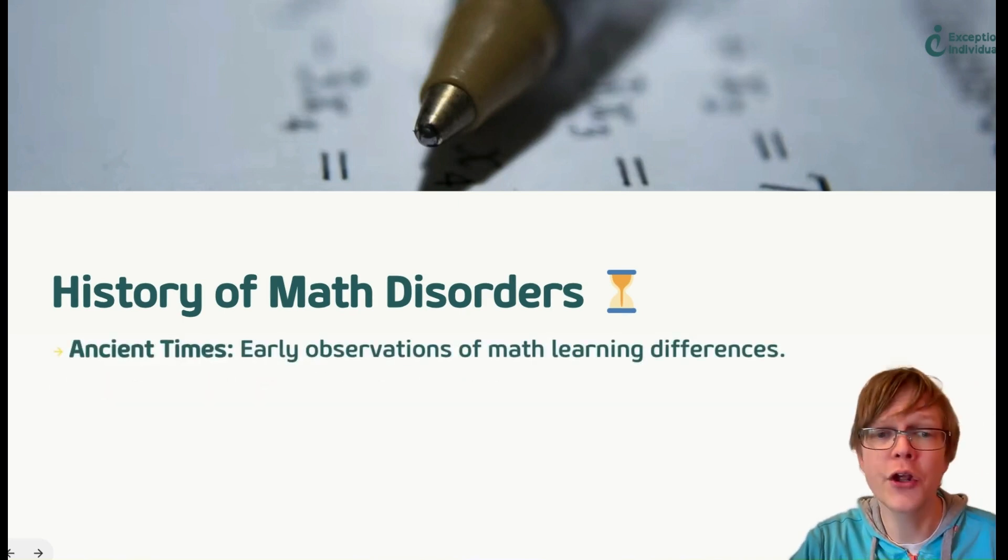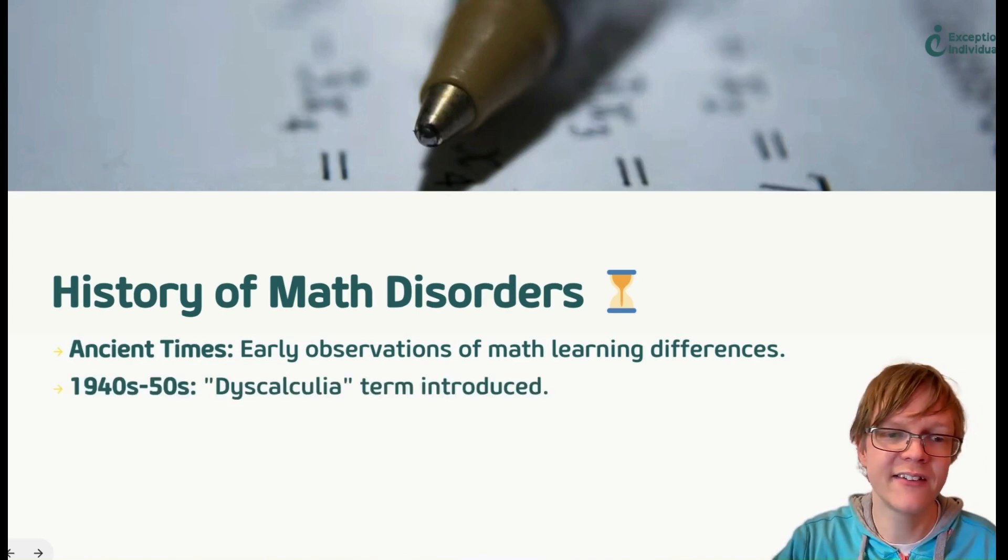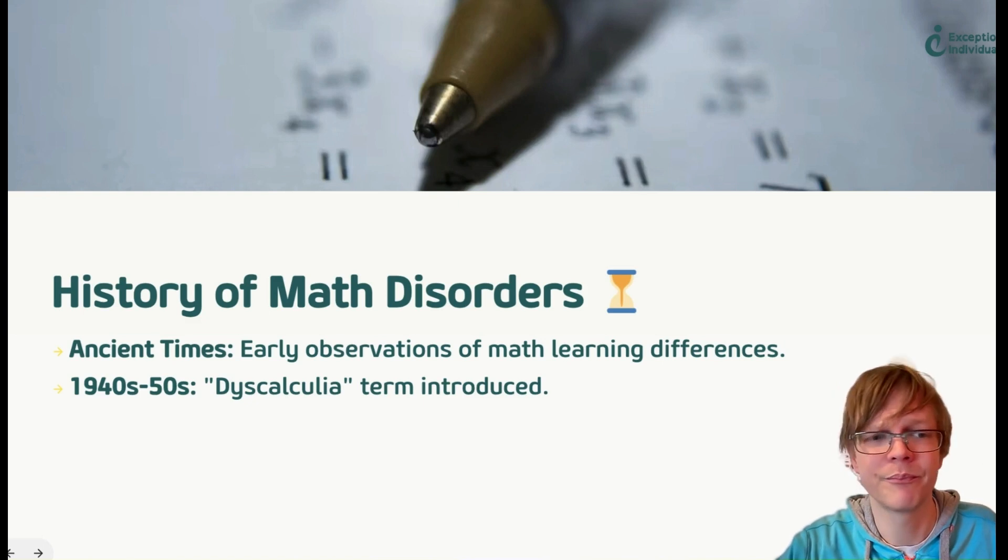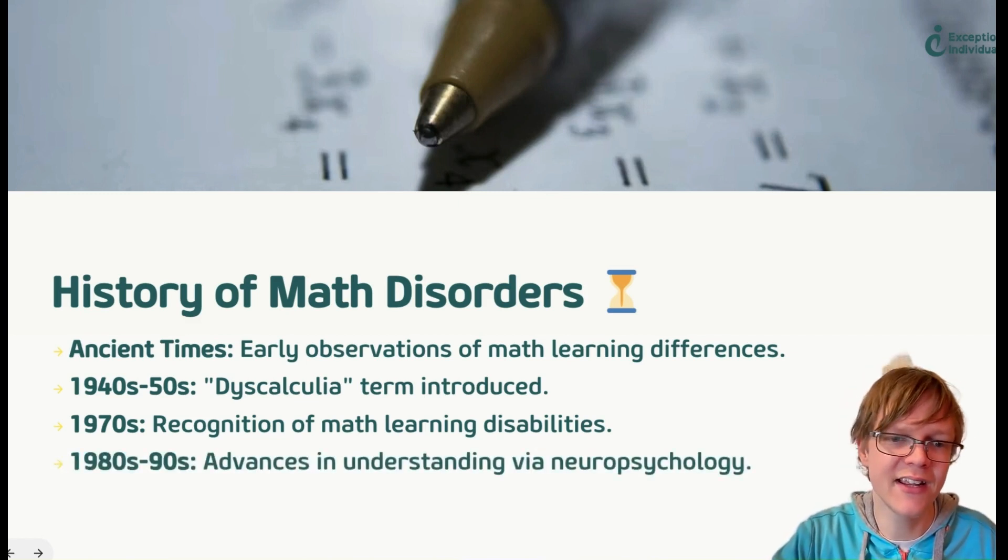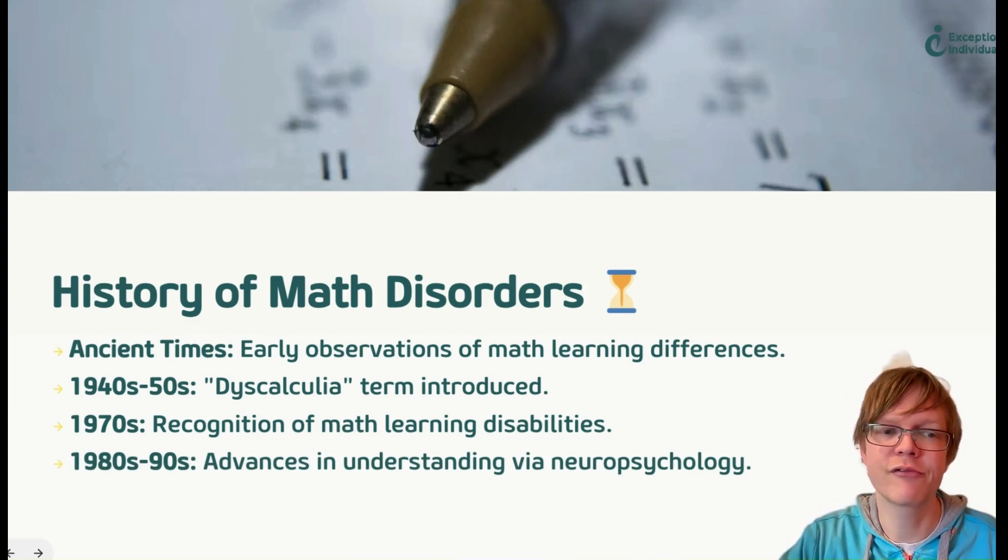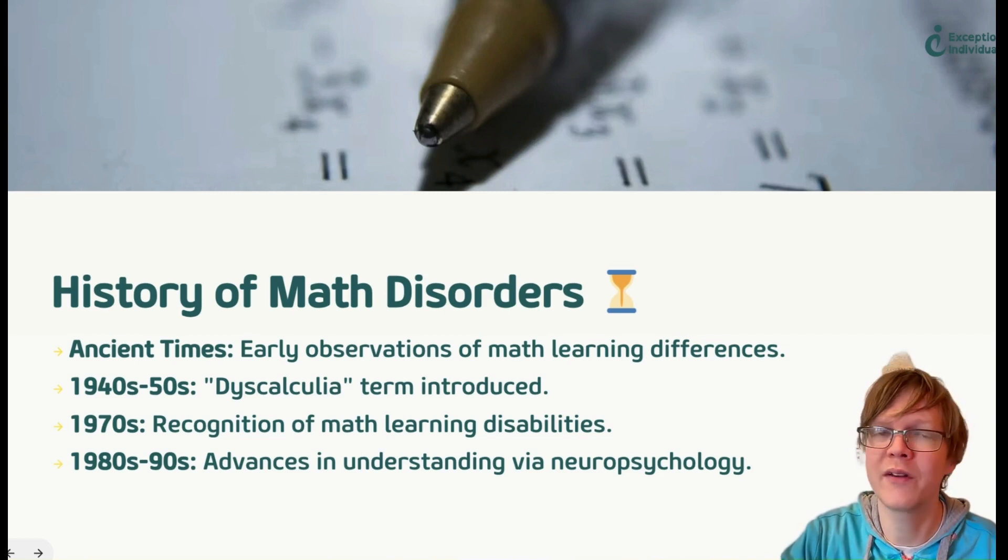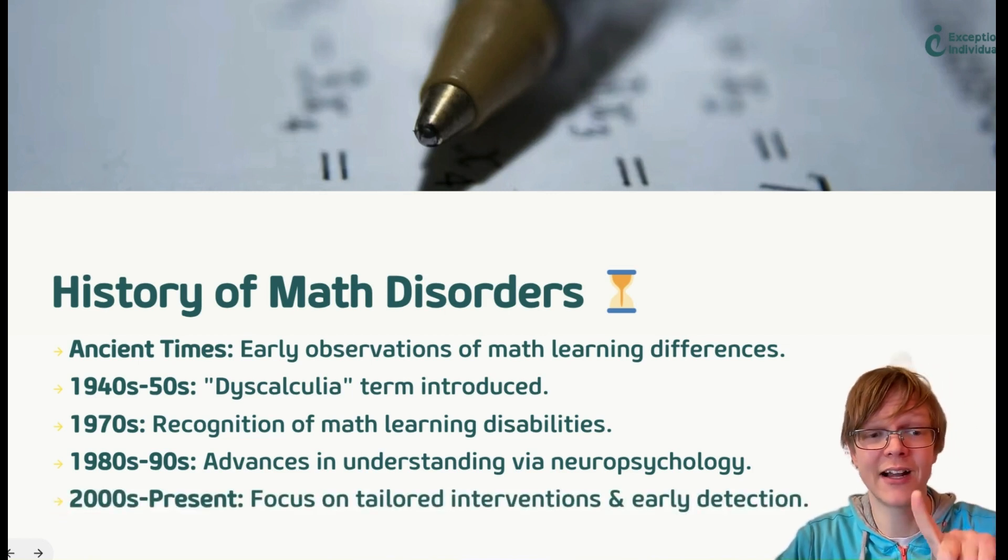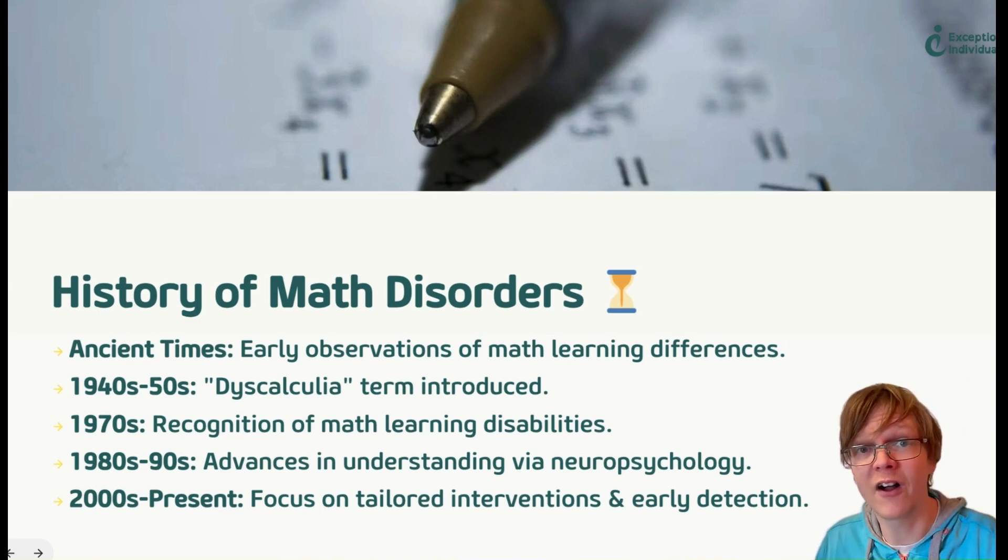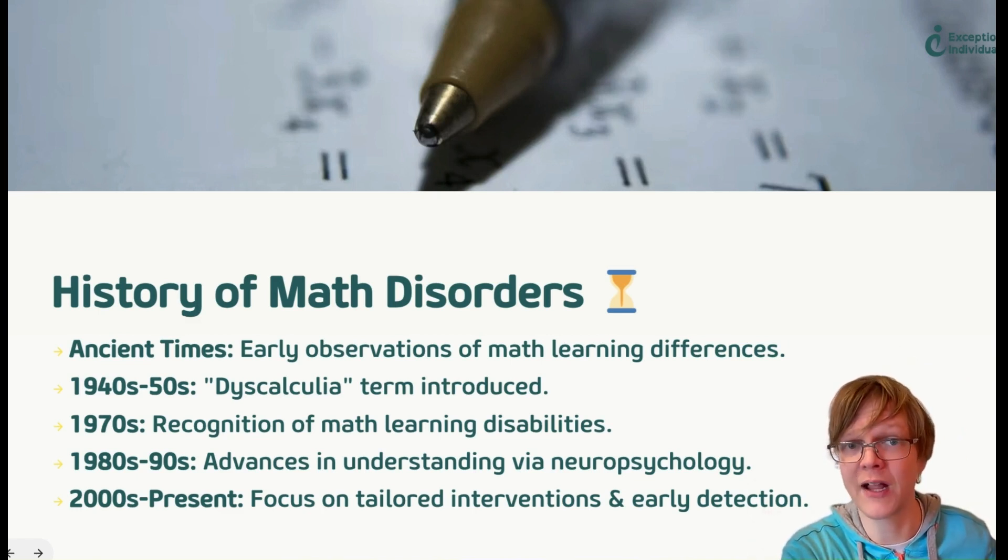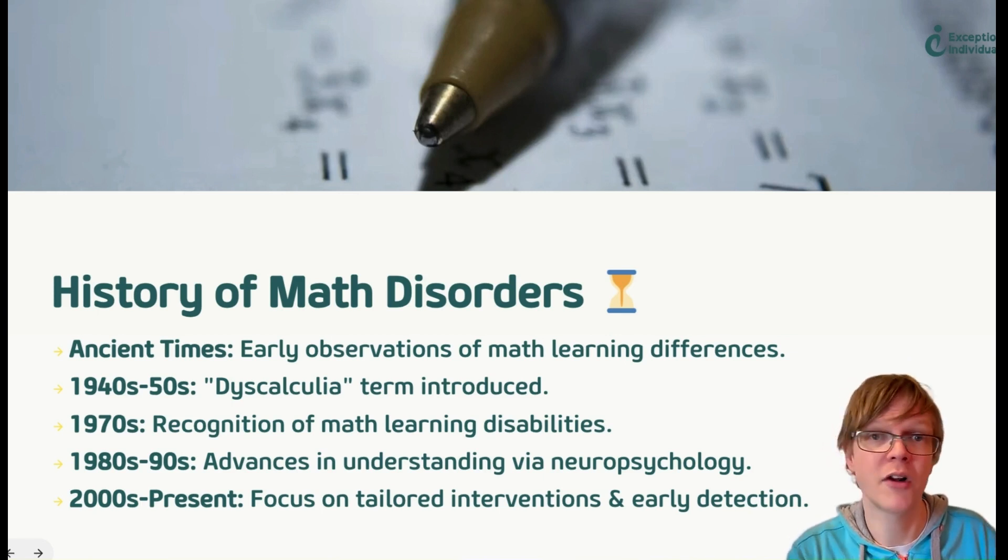Let's do a little bit of quick history because history is fun. In ancient times, we had early observations. Then 40s or 50s, dyscalculia was first introduced, but no one used it. In the 70s, people started to acknowledge it and support it. In the 80s to 90s, we are really advancing our understanding. 2000s to now, we are focusing on tailored interventions and early detections.